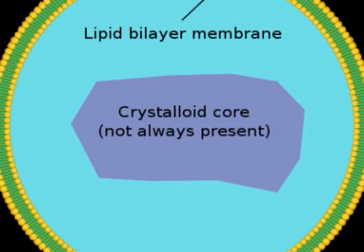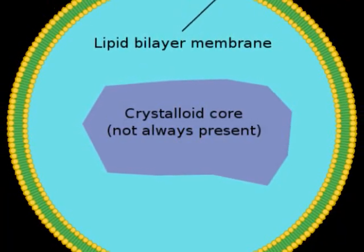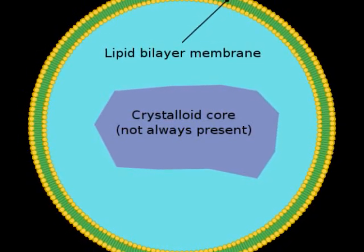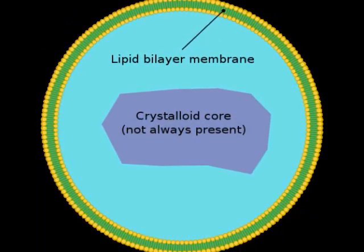Peroxisomes have a lipid bilayer membrane and sometimes have a crystalloid core. They contain enzymes for detoxification of many biochemicals, including alcohol.